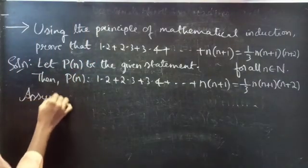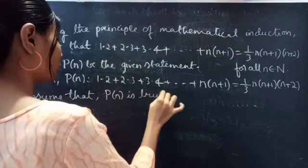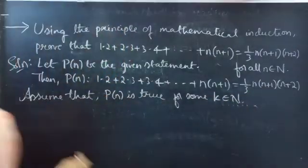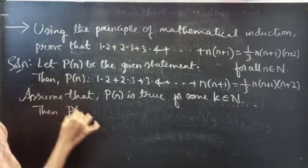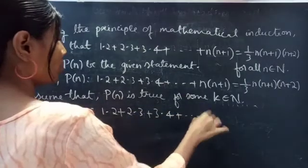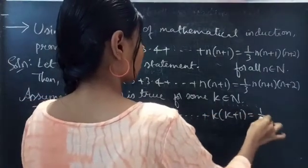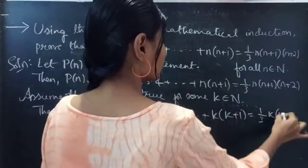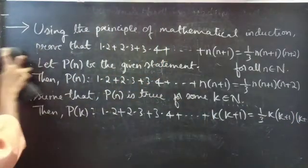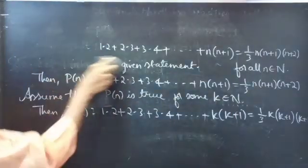Now assume that P(n) is true for some K which belongs to natural numbers. Then P(K) states that 1·2 + 2·3 + ... + K(K+1) — the sum of K terms — equals (1/3)·K·(K+1)·(K+2). Since P(K) is true, we will show that the statement is also true for K+1.